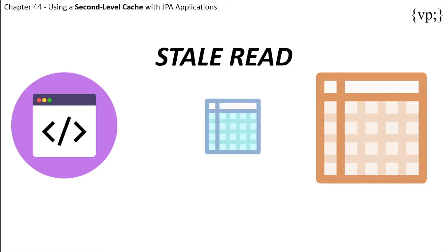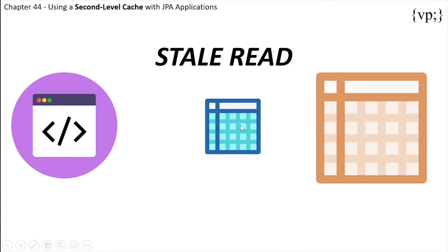One problem that may happen when using a second level cache in an application is that the underlying original data may have changed while the value of the cache has not. This inconsistency is called a stale read, where the database has changed values but your cache data has not.